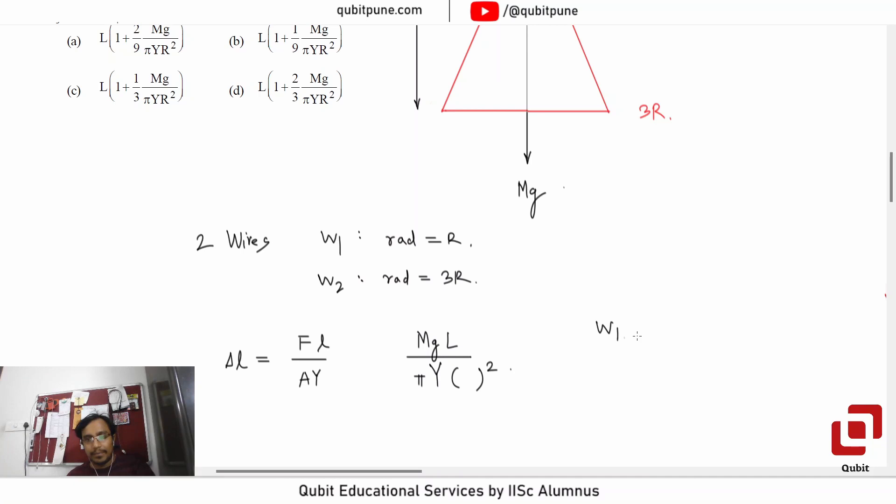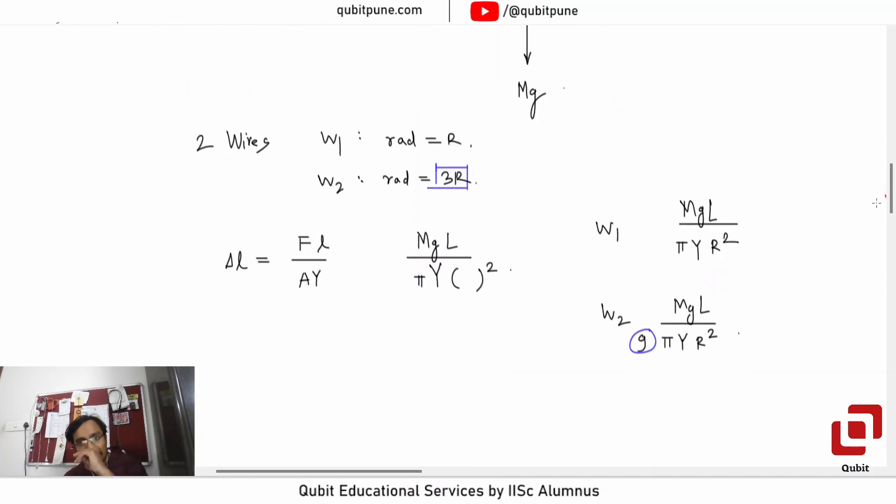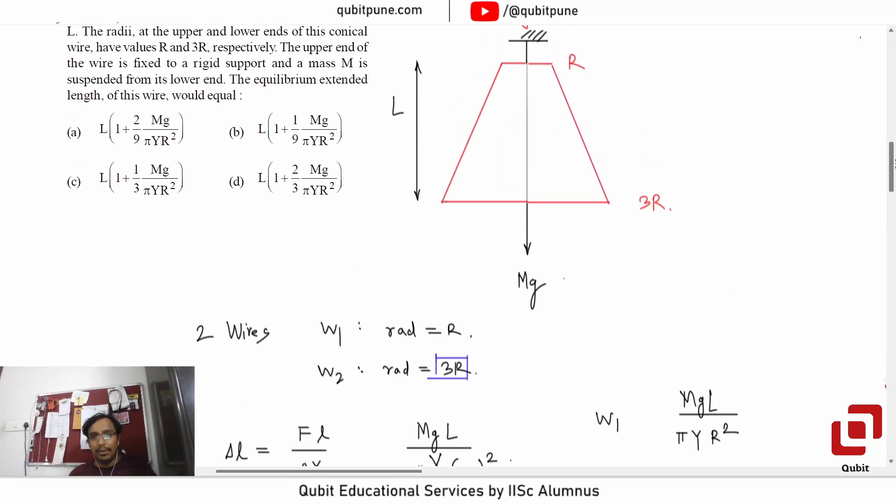So MG L by Y into pi into radius squared. Now for wire 1, radius is actually capital R, so it will be simply MG capital L upon pi Y R squared. And for wire 2, how much will it be? MG capital L upon pi Y into 9 R squared, because it has a radius 3R.